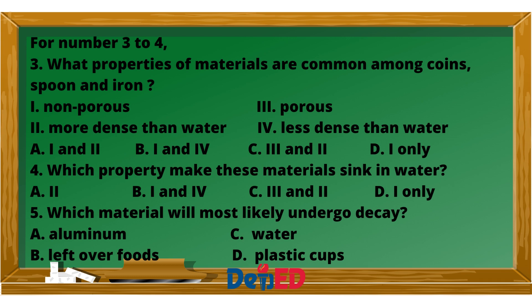For numbers 3 to 5. Number 3: What properties of materials are common among coins, spoon, and iron? 1. Non-porous, 2. More dense than water, 3. Porous, 4. Less dense than water. A. 1 and 2, B. 1 and 4, C. 3 and 2, D. 1 only. Number 4: Which property makes this material sink in water? A. 2, B. 1 and 4, C. 3 and 2, D. 1 only. Number 5: Which material will most likely undergo decay? A. Aluminum, B. Leftover foods, C. Water, D. Plastic cups.